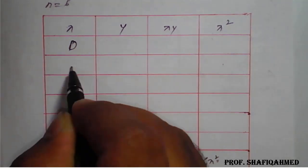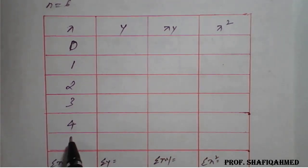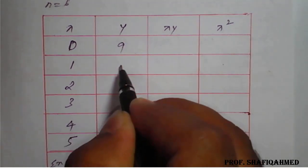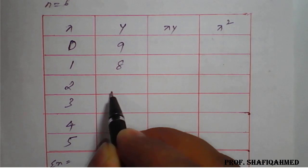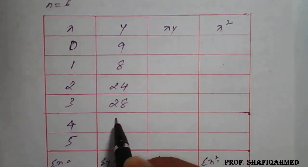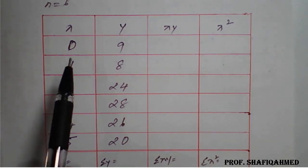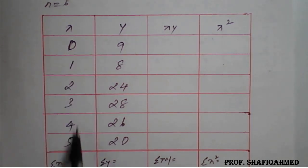We will note down the values of x now: 0, 1, 2, 3, 4, and 5. The values of y are: 9, 8, 24, 28, 26, and 20.